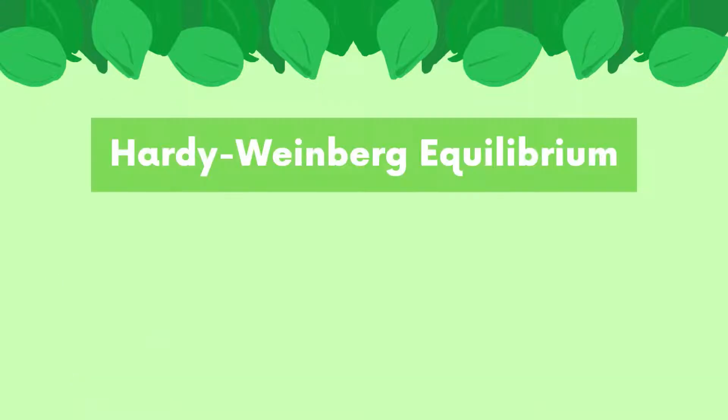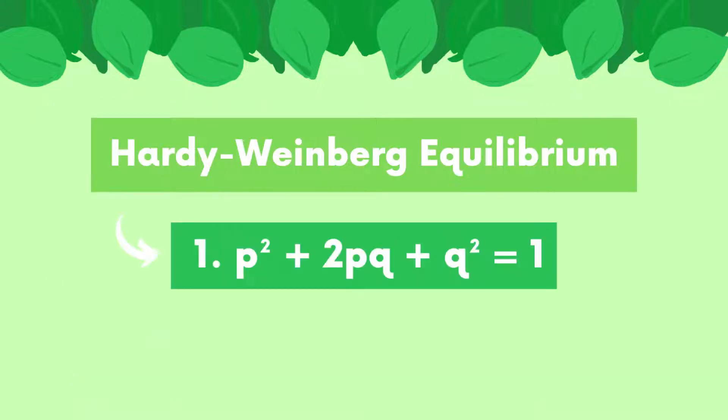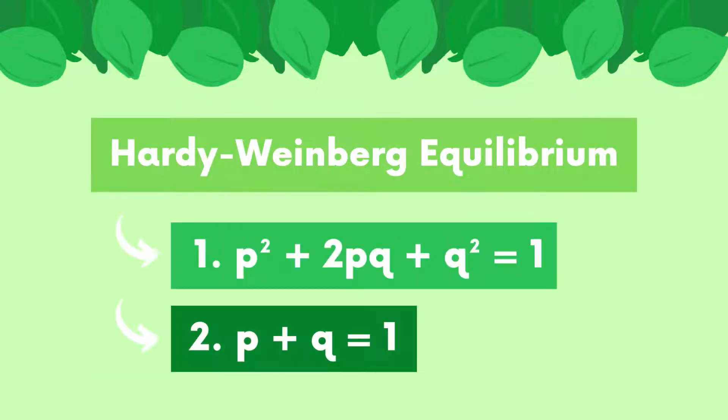Now that we know the limitations, let's talk about the equations. There are two main equations for Hardy-Weinberg Equilibrium: p² + 2pq + q² = 1, and p + q = 1.